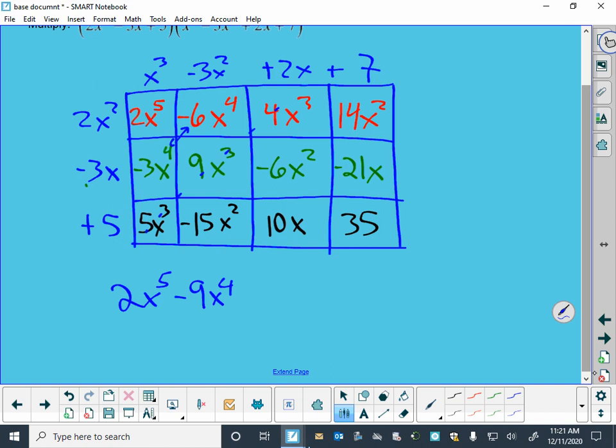There are the x² terms: negative 15 plus 14 is negative one, negative one and negative six is negative 7x². 10 minus 21 is negative 11x.